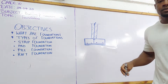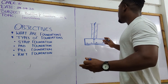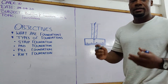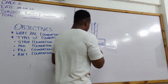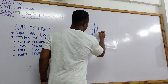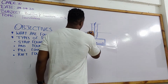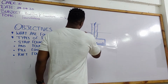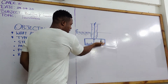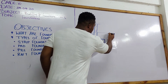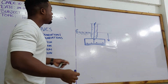Now look at this — this would be the overall structure or design of a standard strip foundation. Right here you can see ground level. This section below is below the subsoil or below ground level.